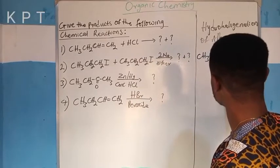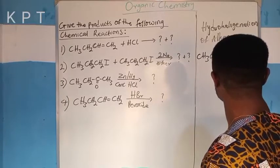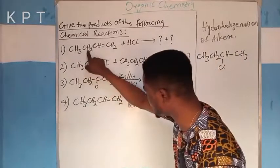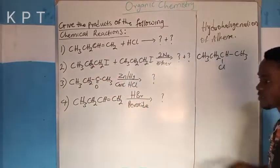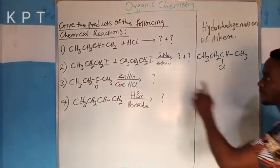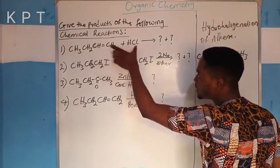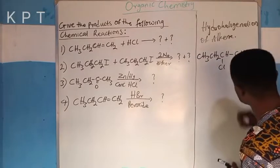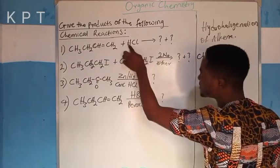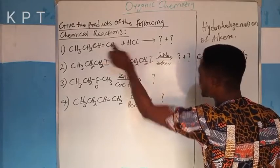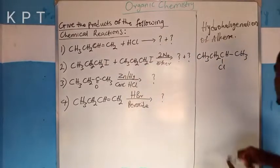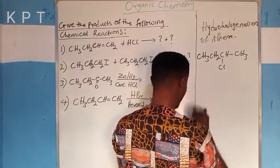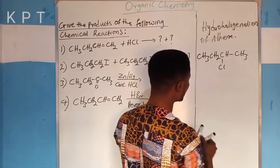The product is CH3-CH2-CHCl-CH3. Notice that CH3 and CH2 are written as they are because the reaction does not take place where they are. The chlorine entered here to make it CHCl, and the hydrogen entered here to make it CH3. So the name of this compound is 2-chlorobutane.